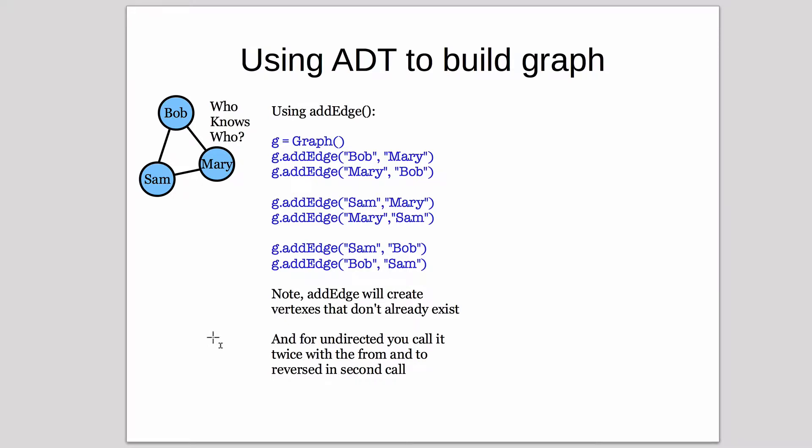So let's look at how you would build a graph using that ADT. You create a new graph object, and this is for an undirected graph, so we add an edge. This who knows who, so Bob knows Mary and Mary knows Sam. Those are not directional, so we need to add an edge in both directions. So Bob knows Mary and Mary knows Bob. We have to add both edges for each of these edges here.